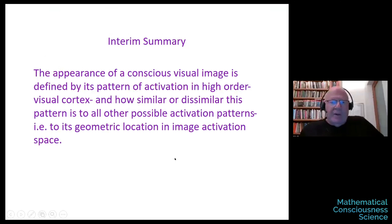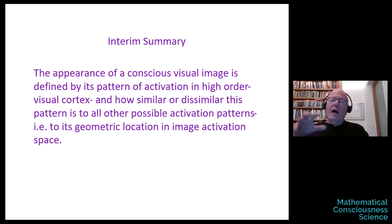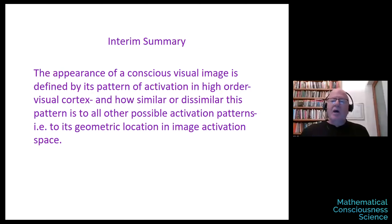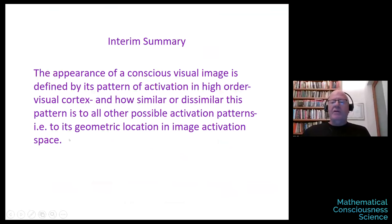To summarize this first part: the appearance of a conscious visual image is defined by its pattern of activation in high-order visual cortex — not only the unique pattern of each face, but also how similar or dissimilar this pattern is to all other activation patterns. The appearance is defined by the geometric location of the specific face within the geometry of the image activation space.